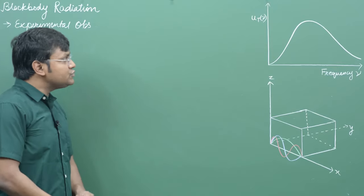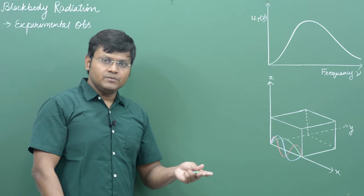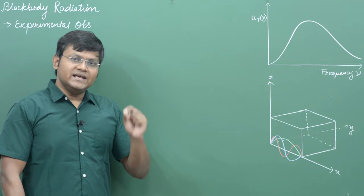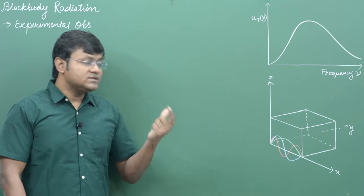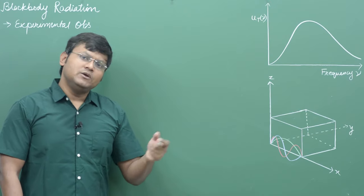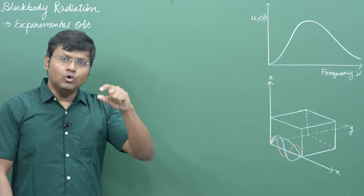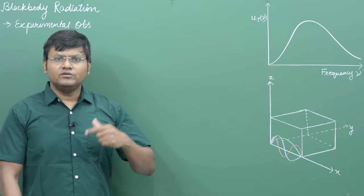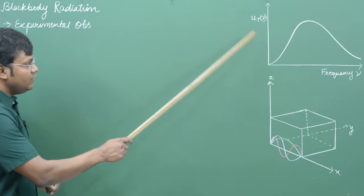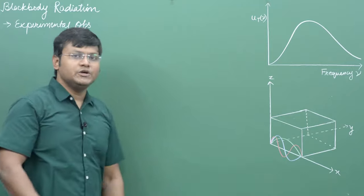Looking at the experimental observations of the black body radiation spectrum: the graph has frequency (or wavelength) on the x-axis and spectral energy density on the y-axis. Spectral energy density refers to energy per unit time per unit surface area or per unit volume. For small frequencies the spectral energy density is very low; it increases with increasing frequency, reaches a maximum, and then goes back to zero — a simple bell-shaped curve.